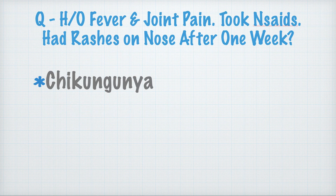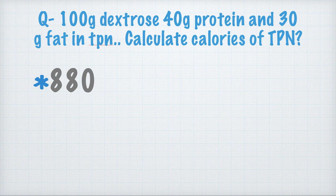History of fever and joint pain — the patient took analgesics and had rashes on the nose after one week. This is a very easy and repetitive question; the answer is chikungunya.